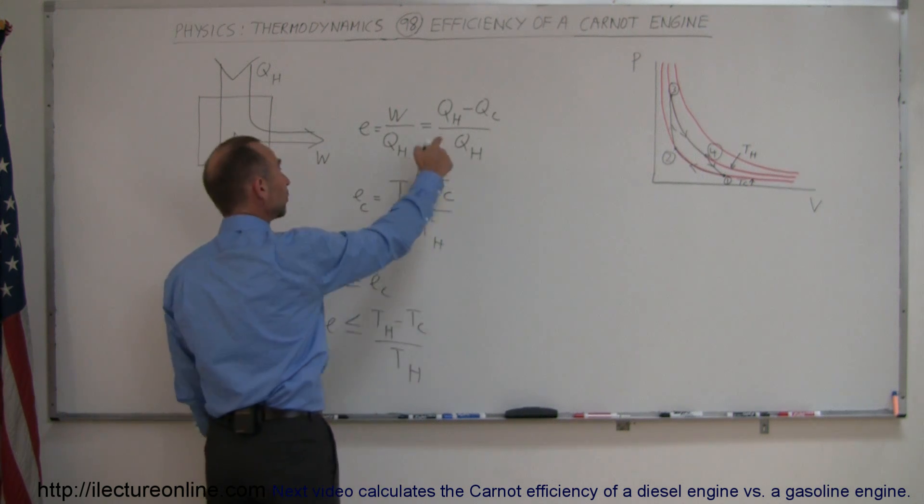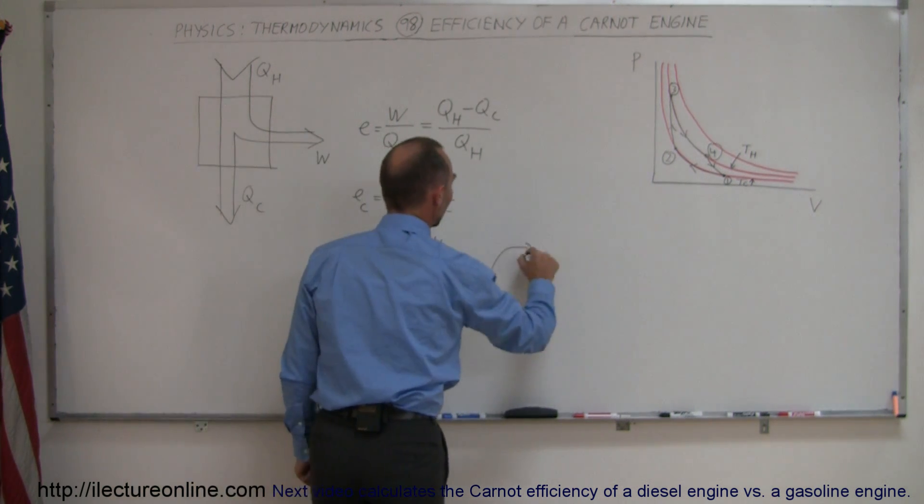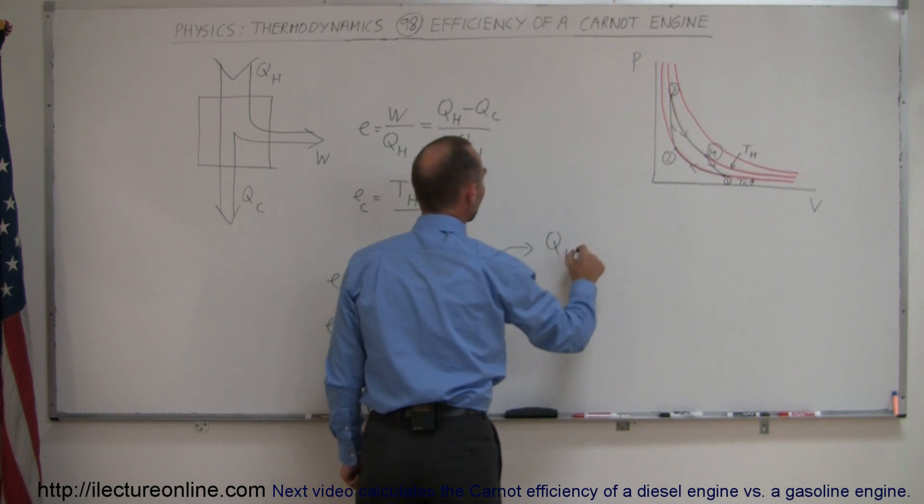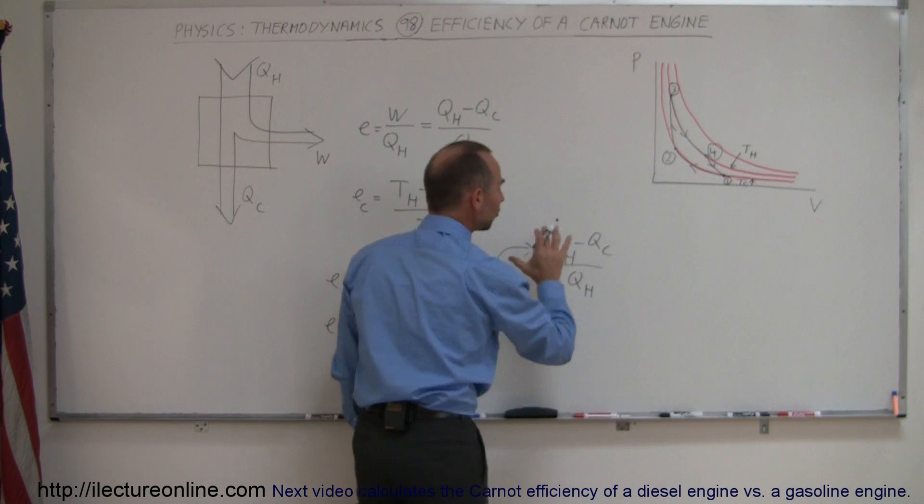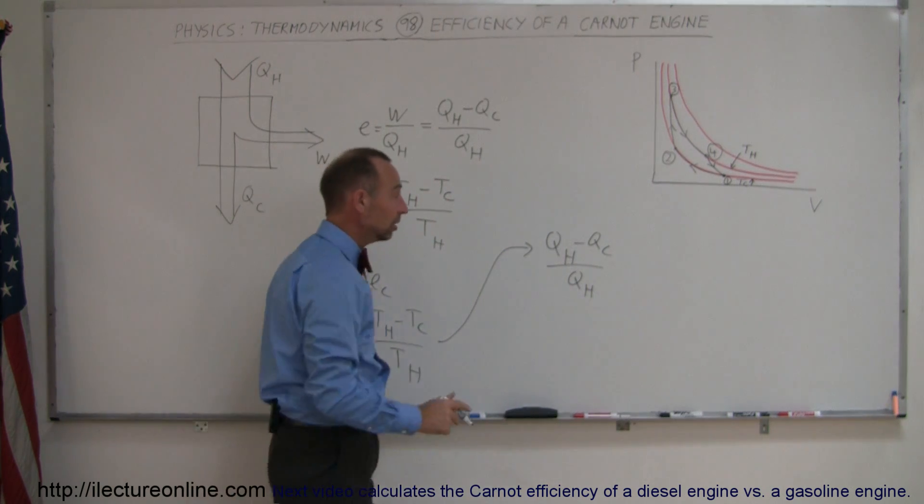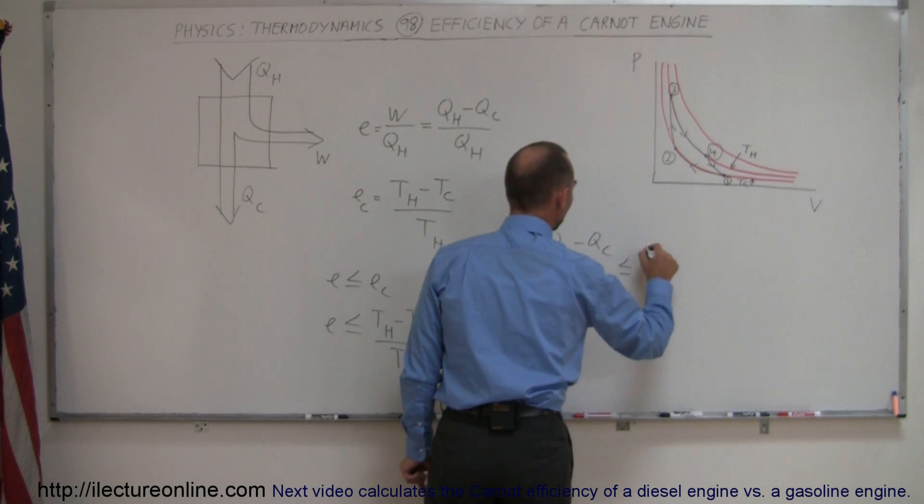If you plug that part of it in, you can always say that Q_hot minus Q_cold divided by Q_hot, which is the efficiency calculated for any engine, is always going to be less than or equal to T_hot minus T_cold divided by T_hot.